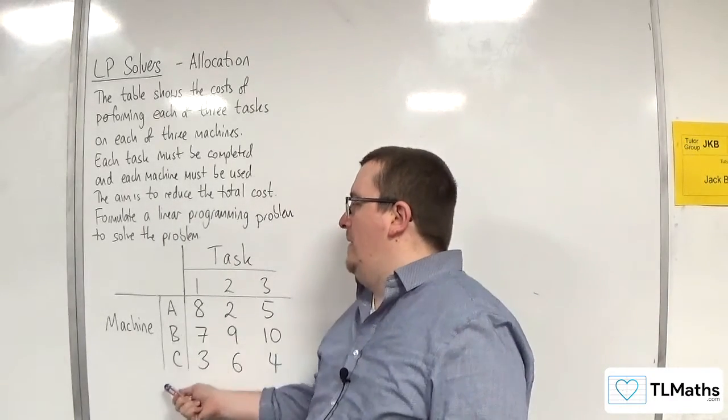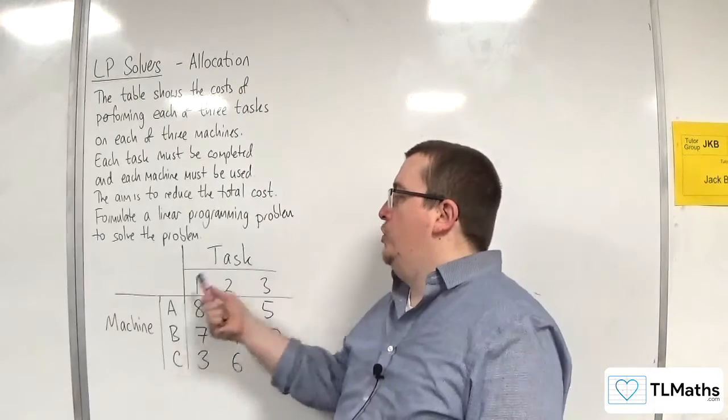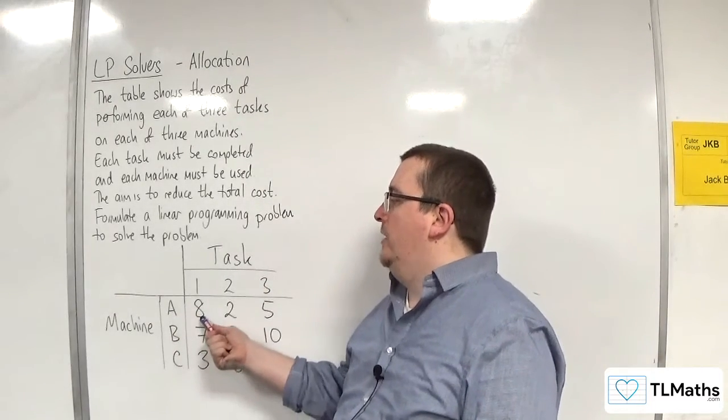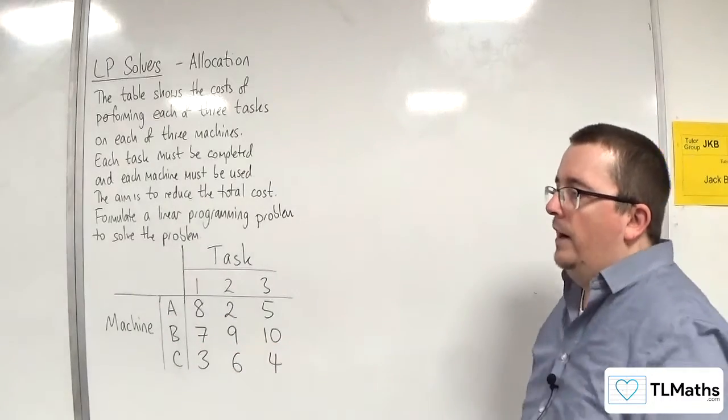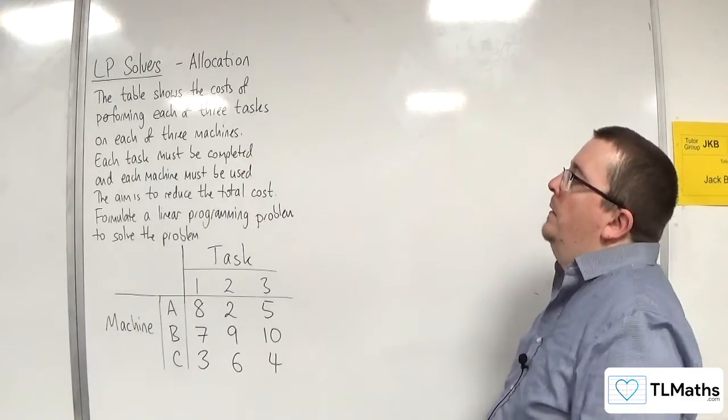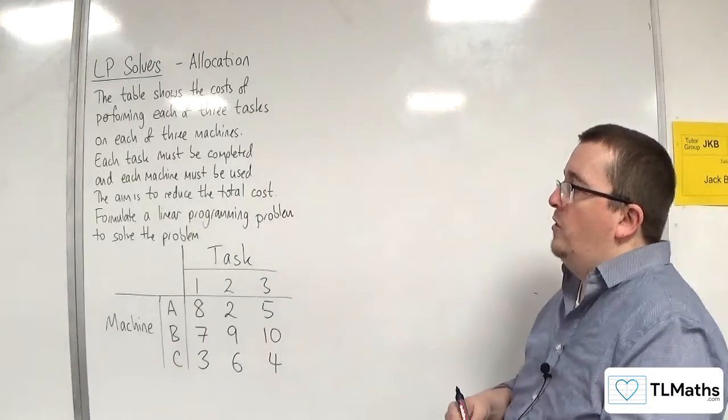So we've got the machines A, B, C, and tasks 1, 2, 3. What this is telling me is that machine A costs 8 to do task 1. So that could be £8 or it could be £80. It doesn't matter. So how do I formulate this as a linear programming problem?